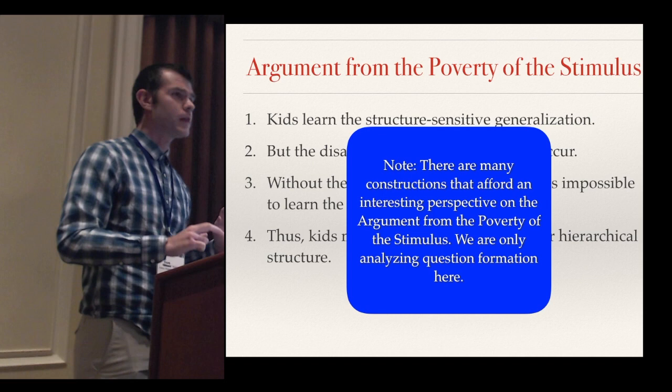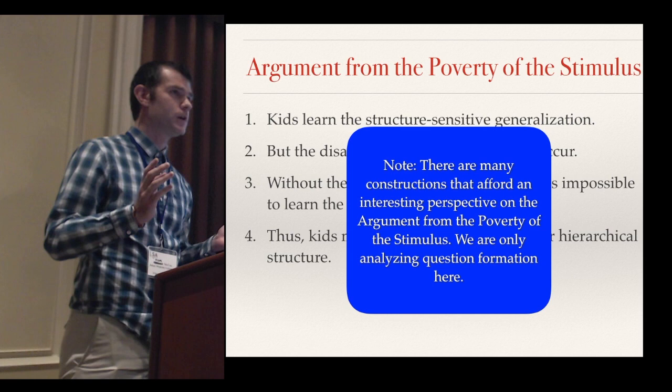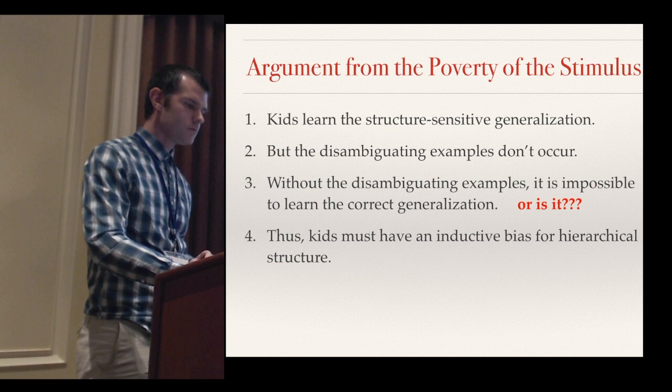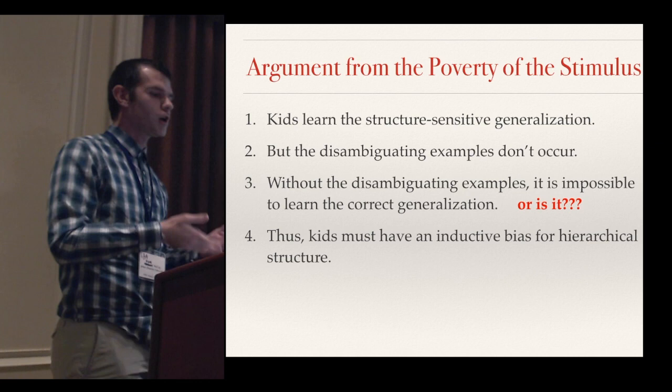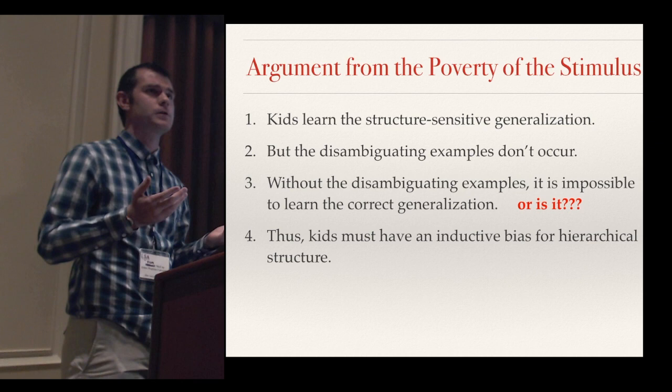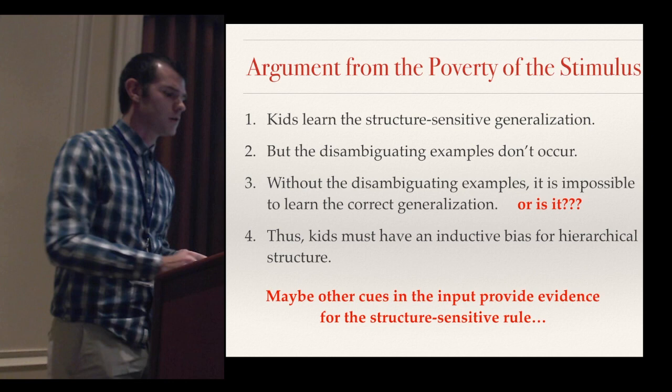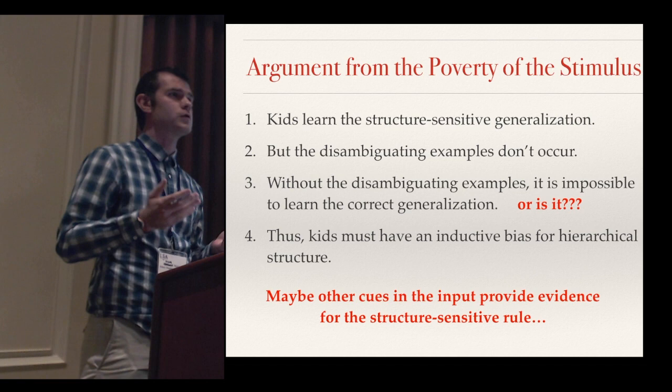There are many constructions other than question formation that afford an interesting perspective on the poverty of the stimulus, but here we only analyze question formation, and in future work we would like to look at other transformations. Many people have argued against this argument — for example, many have contested point two by looking at the child-directed speech corpus and finding that relevant examples do occur. But in this work, we're focusing on point three: the claim that without disambiguating examples, it would be impossible to learn the correct generalization. You can imagine that there are other cues in the input that would bias you towards the correct generalization even without direct evidence for it.